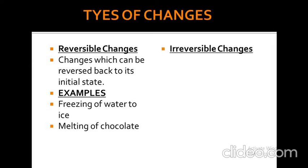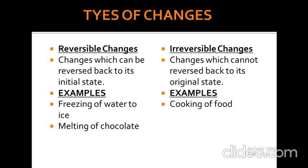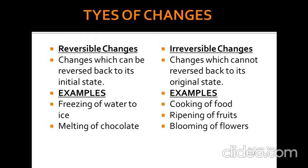Now what is irreversible change? Changes which cannot be reversed back to their original state or original position are known as irreversible changes. For example, cooking of food, ripening of fruits, and blooming of flowers. These are the types of irreversible changes.